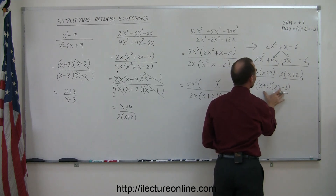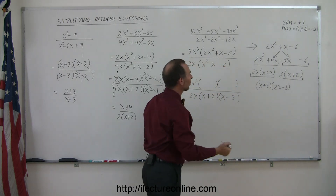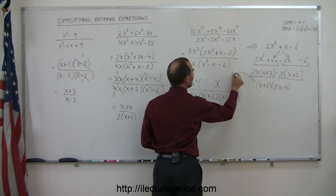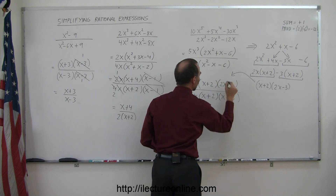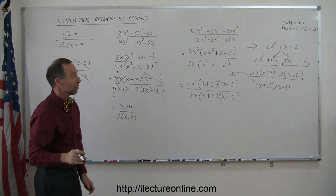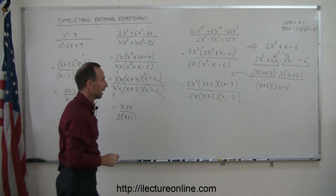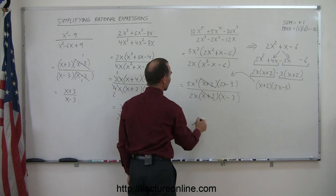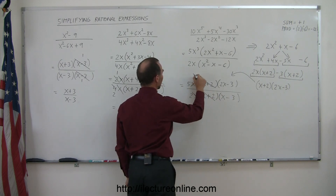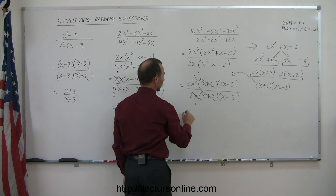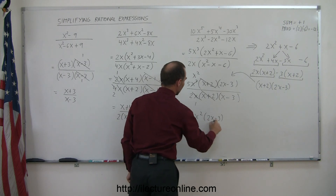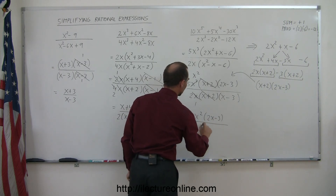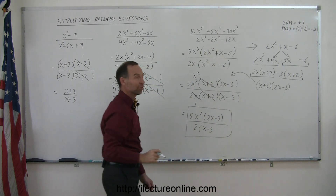Now I can plug the factored forms in. The full expression is 5x³ times (x + 2)(2x − 3) divided by 2x times (x + 2)(x − 3). Canceling (x + 2) from numerator and denominator, and canceling one x from x³ to get x², I'm left with 5x² times (2x − 3) divided by 2(x − 3). That is the simplified form of the original expression.